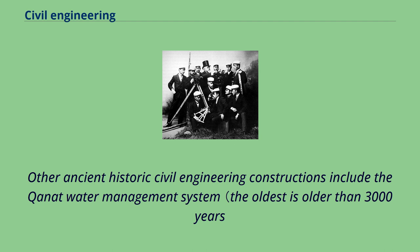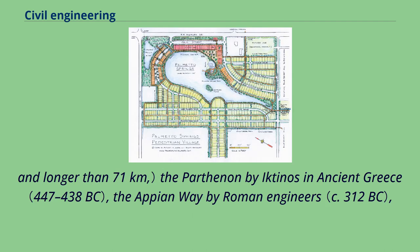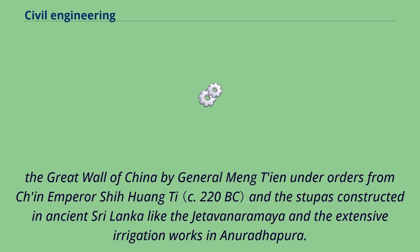And longer than 71 kilometers; the Parthenon by Ictinus in ancient Greece; the Appian Way by Roman engineers; the Great Wall of China by General Meng Tian under orders from Qin Emperor Shi Huangdi; and the stupas constructed in ancient Sri Lanka, like the Mirisavatiya and the extensive irrigation works in Anuradhapura.